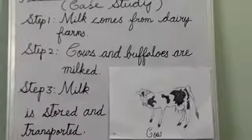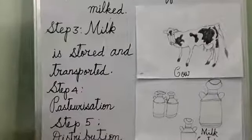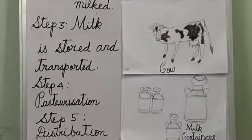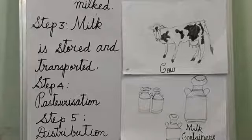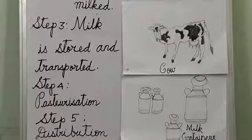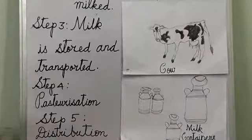Step three: milk is stored and transported. The milk is pumped into storage tanks which keep the raw milk cold. These milk tanks are then taken to the processing plants in special trucks or vans. The storage tanks are cold and do not allow the milk to get spoiled.